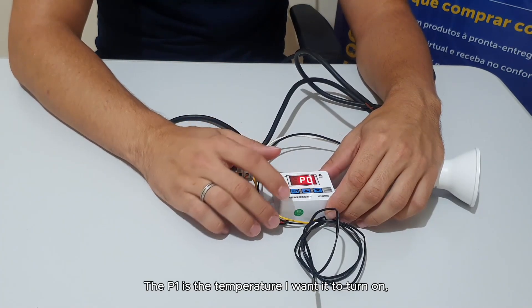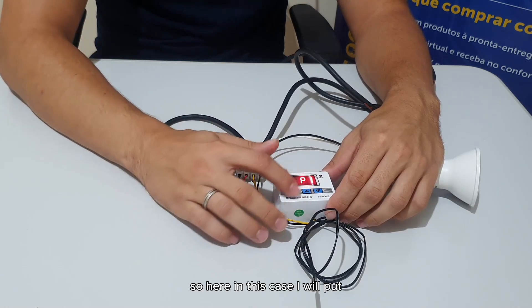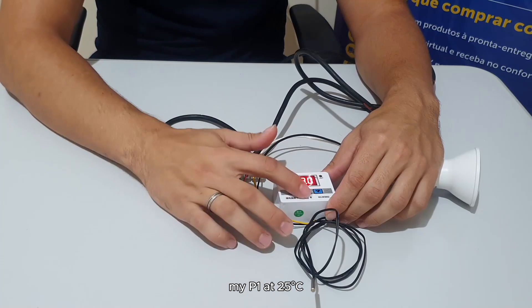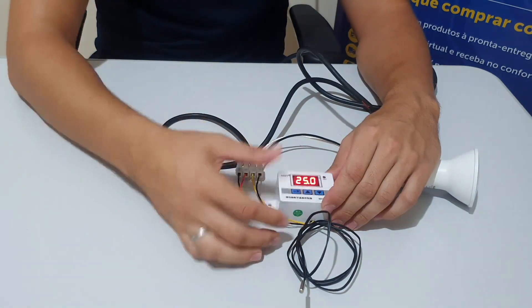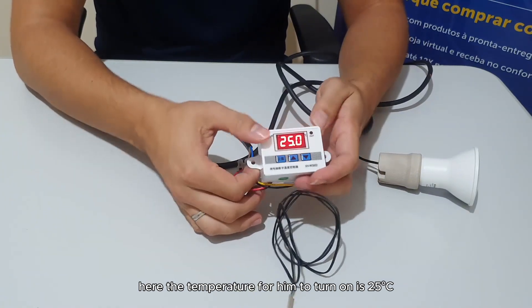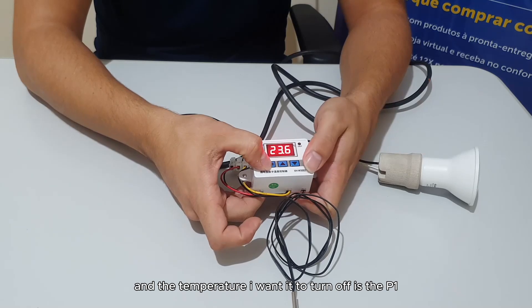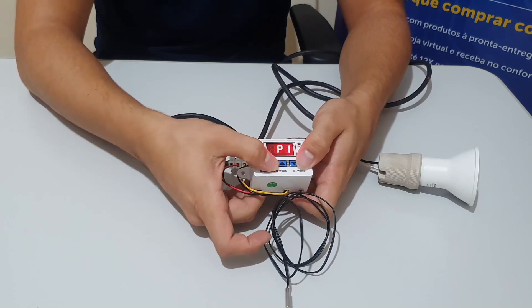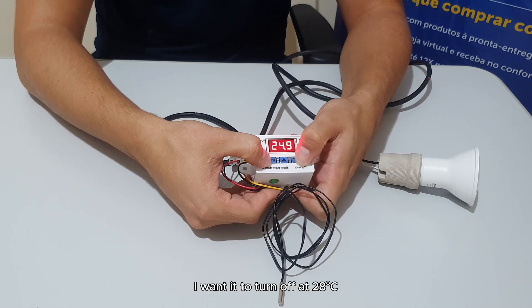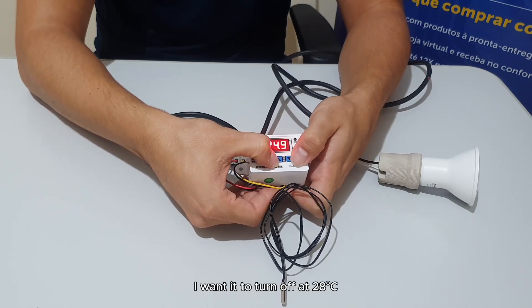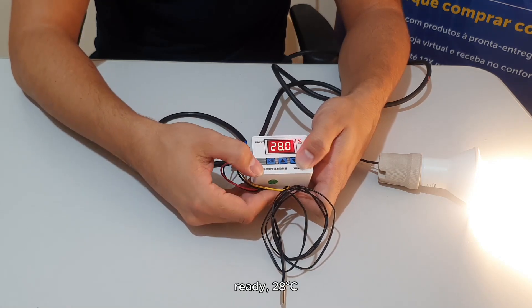The p0 is the temperature I want it to turn on. So here in this case I will put my p0 at 25 degrees celsius. The temperature I want it to turn off is the p1. Then I go to p1, press set, I want it to turn off at 28 degrees celsius. Ready, 28 degrees celsius.